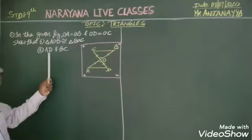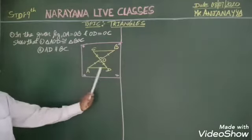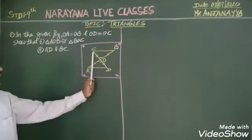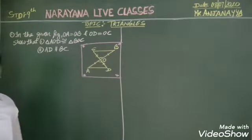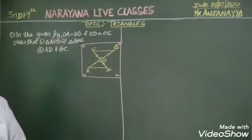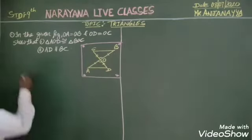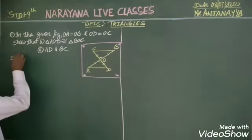And also, we have to prove that AD is parallel to BC. So I will start with the solution.